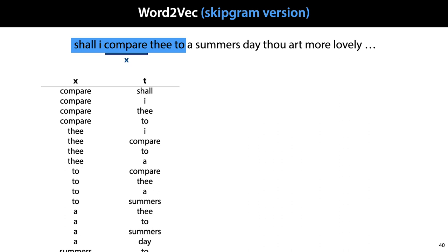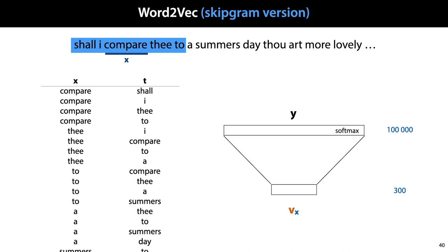And we model this very simply by creating embedding vectors for all of the words in our vocabulary. We then feed the embedding vector for x to a single-layer neural network with one output for every word in our vocabulary and with a softmax activation.